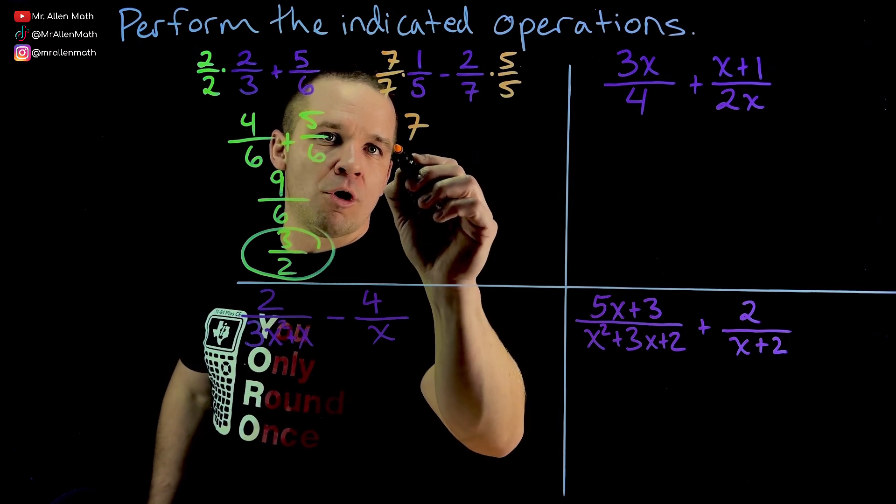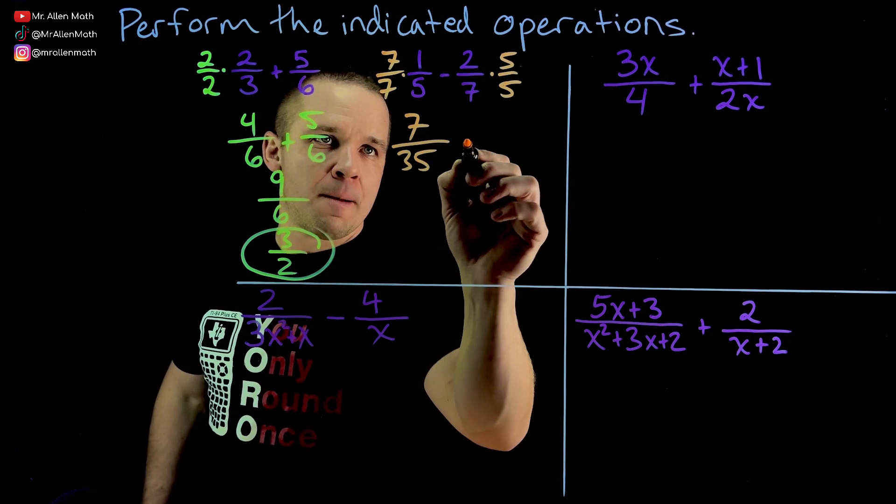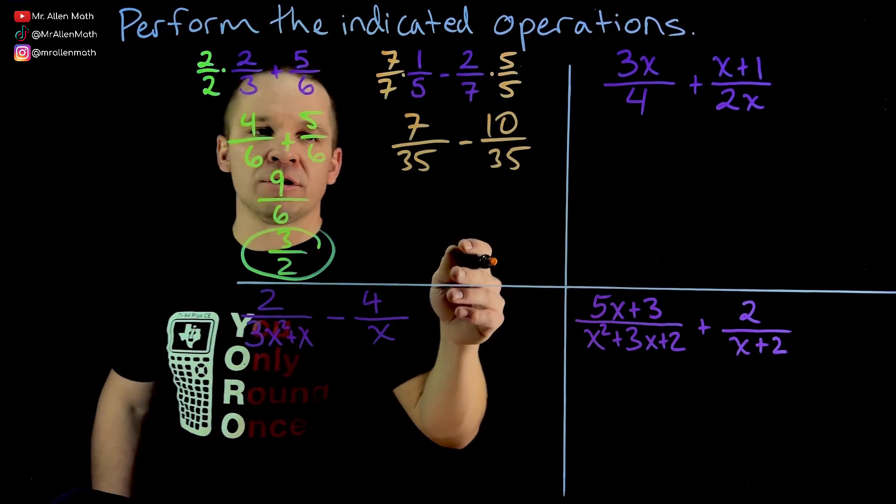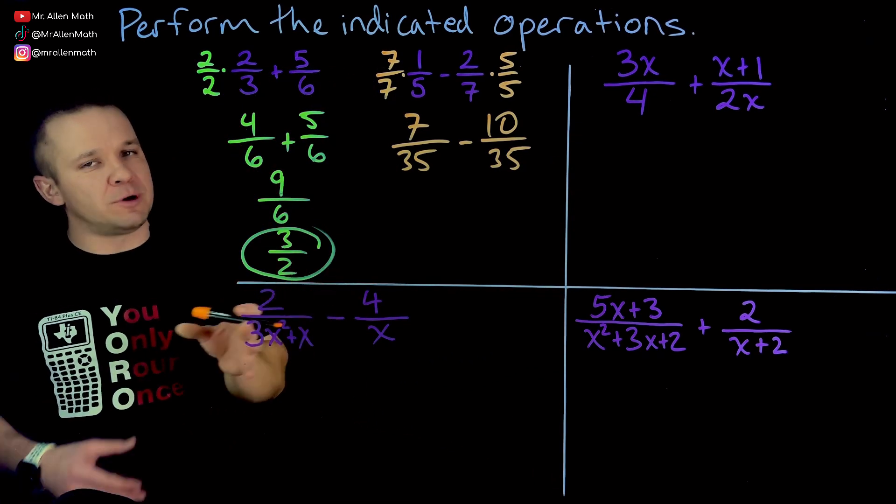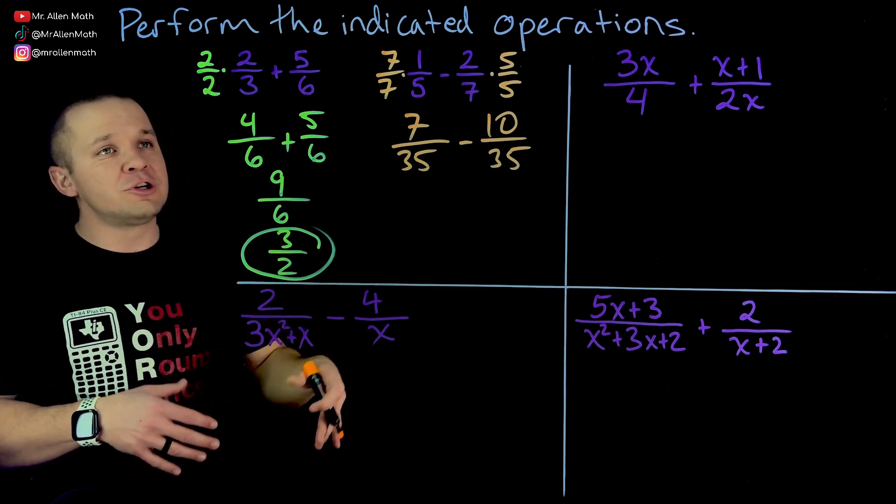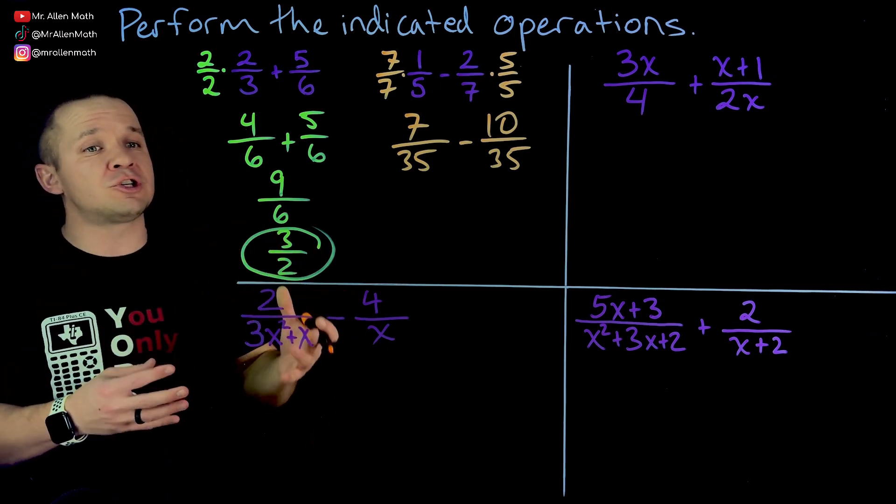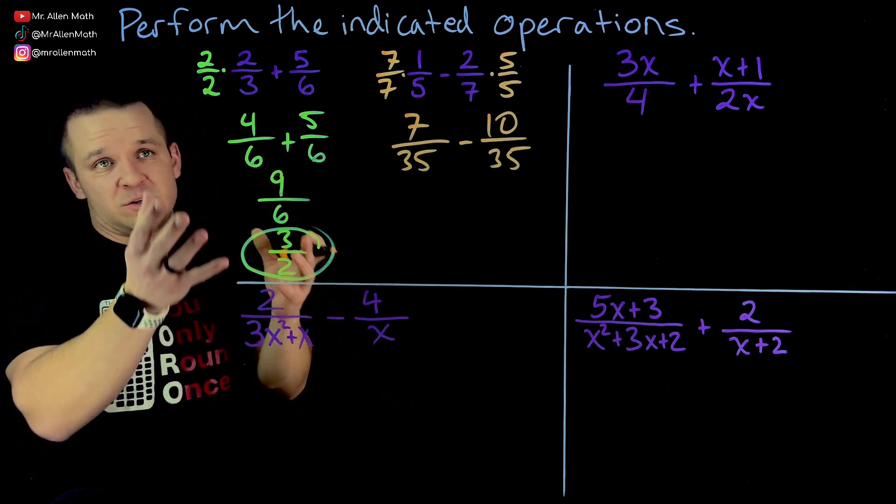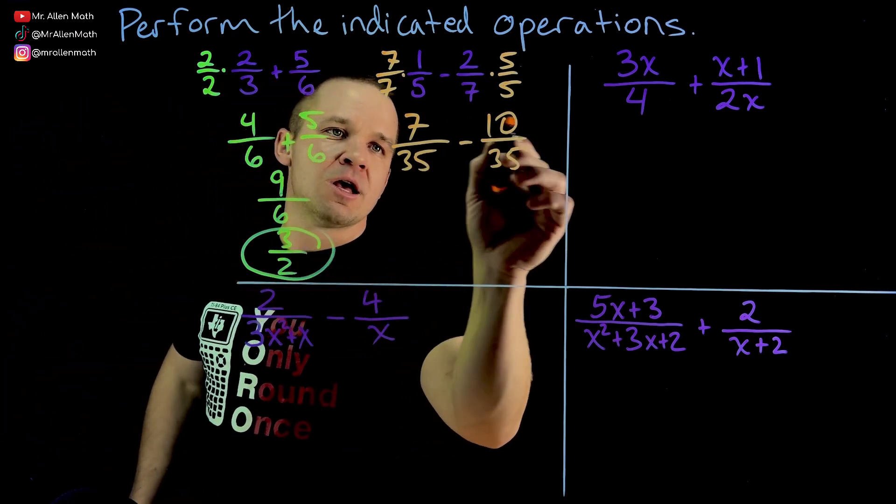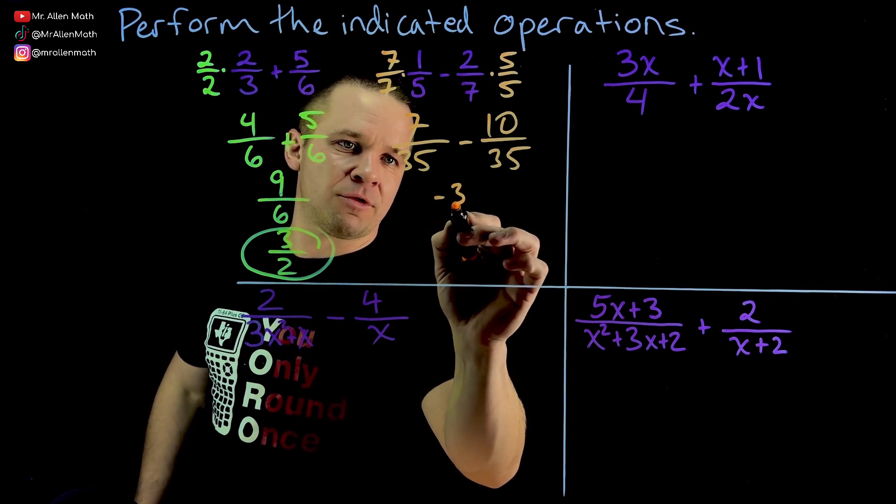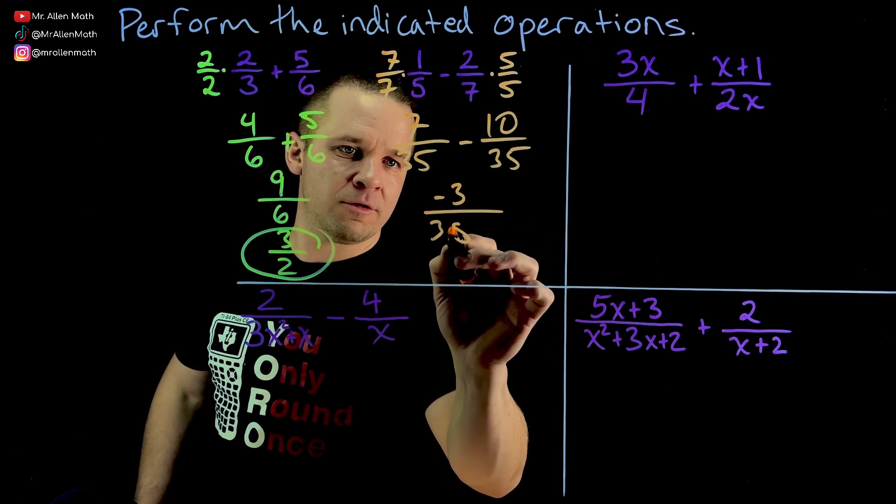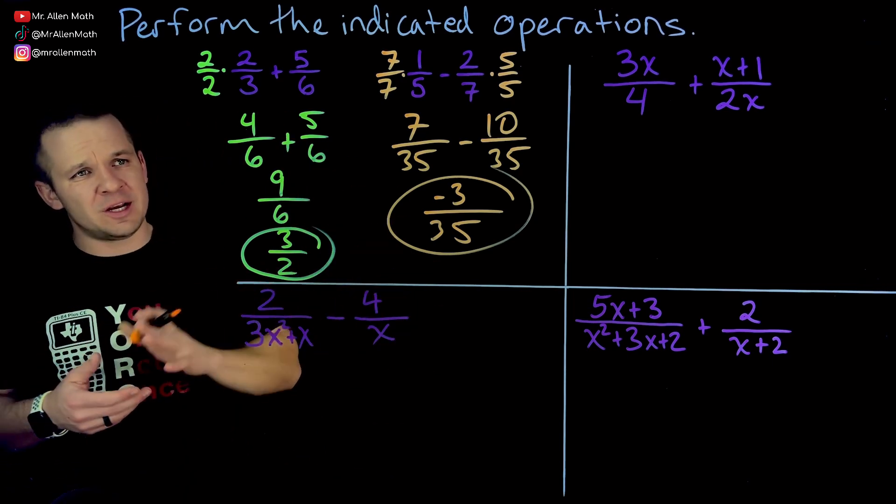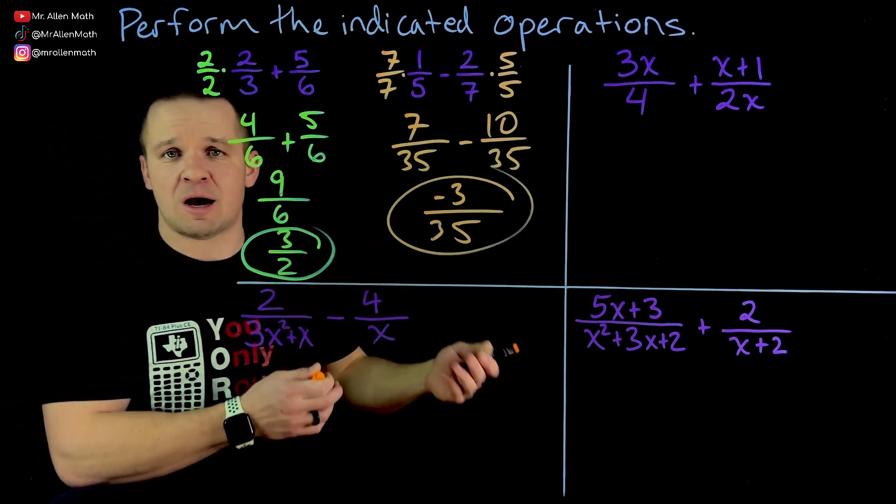So I'm going to have seven over 35 minus 10 over 35. And if you multiply by two big of numbers, but you still get common denominators, that's totally fine. You just want to do some simplifications later on. Always check for simplifications here. We did what we had to do. The smallest we could do. We still have to simplify. So always check. So I got seven minus 10. That's negative three over 35. Boom. Awesome. All right. So the thing here is we want to get into one fraction with a common denominator.